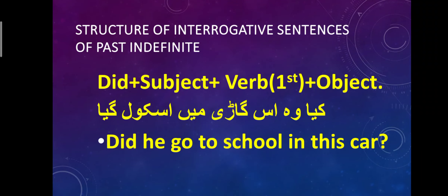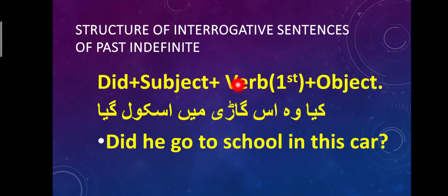Structure of interrogative sentences of Past Indefinite Tense: Did + Subject + First Form of Verb + Object. In interrogative sentences, 'Did' comes first, then the subject, then the first form of the verb, and then the object. For example: 'Kya woh is gaadi mein school gaya?' — Did he go to school in this car? Notice: Did + subject + first form of verb 'go' + object.